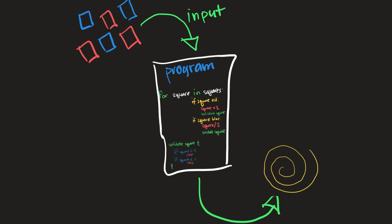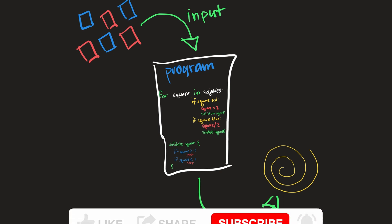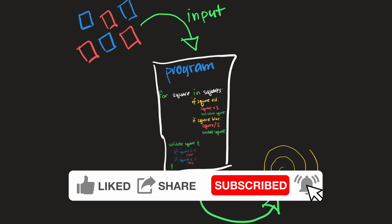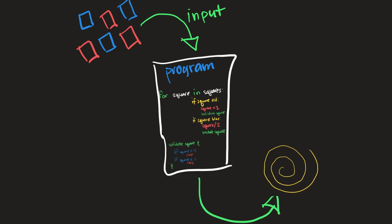The output depends entirely on what color square is the input. With this understanding of how programs are structured and how they work, you're now ready to move on to learning your first programming language. If you found this helpful, please leave a like, and if you're interested in more content like this, go ahead and subscribe. I'll see you in the next one.